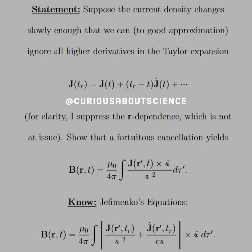Then J evaluated at t_r is equal to J(t) plus (t_r - t) times J̇(t) plus higher order terms, which we don't really want. So,